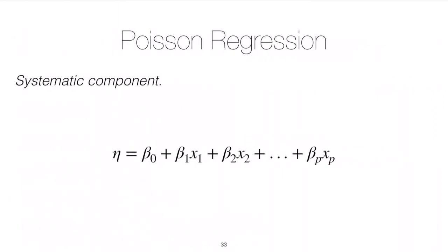The link function ties the systematic component to the random component. The systematic component is a linear combination of the covariate class, which we call η — the same as in binomial regression. Generally, ηi = β₀ + β₁xi1, specifying a particular measurement in your data set.